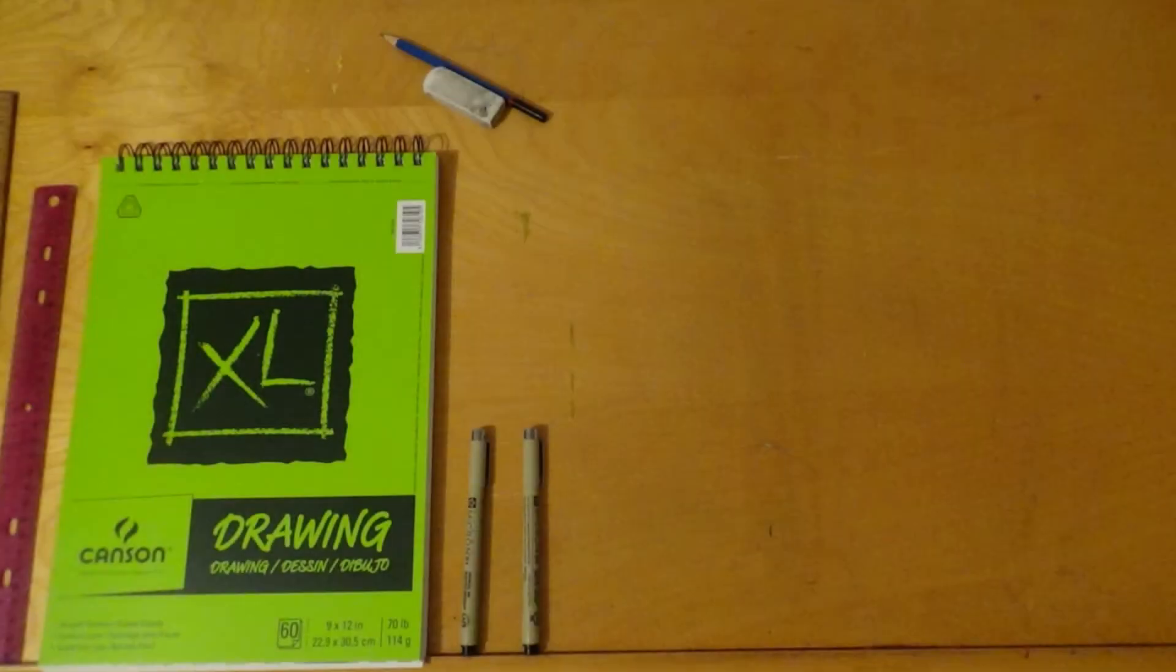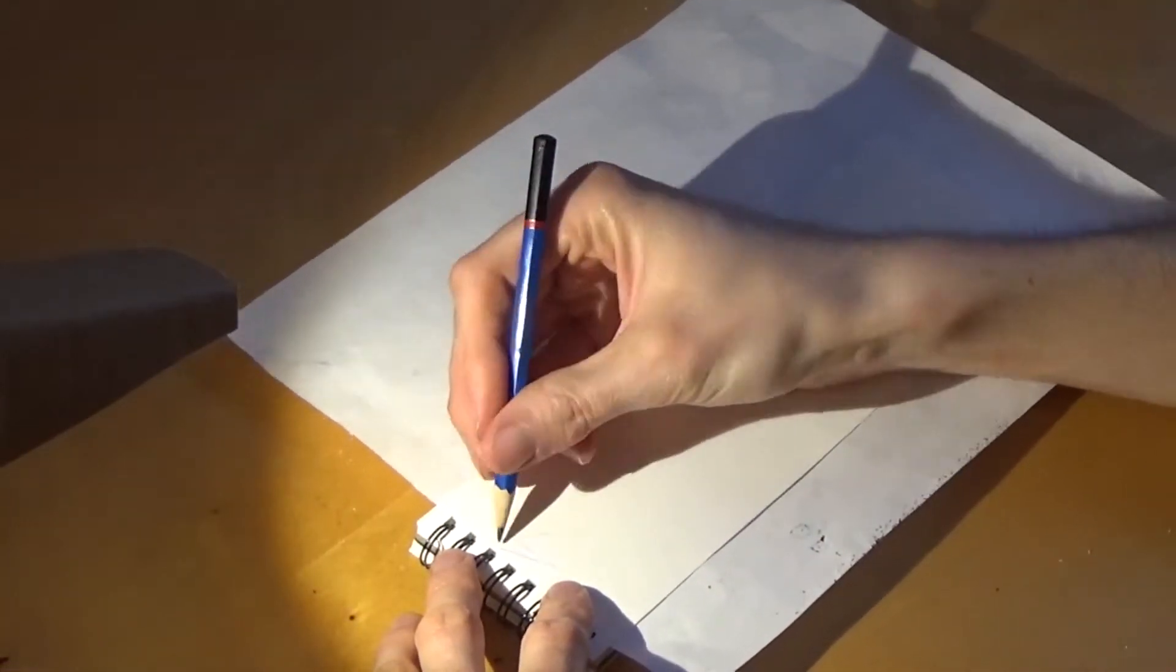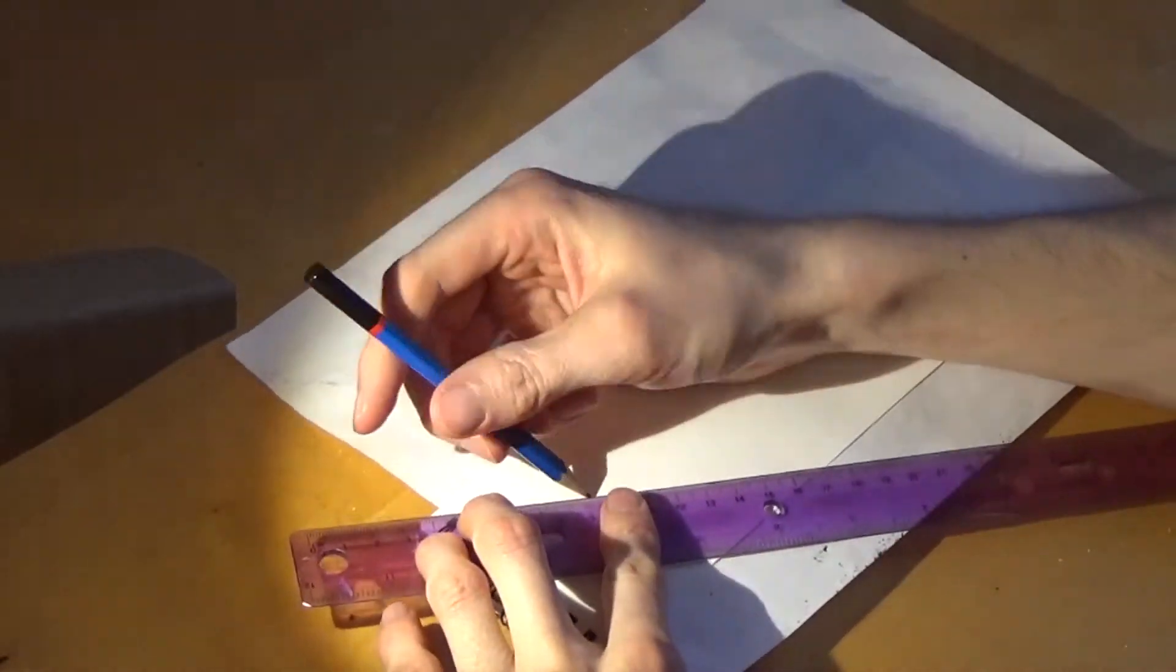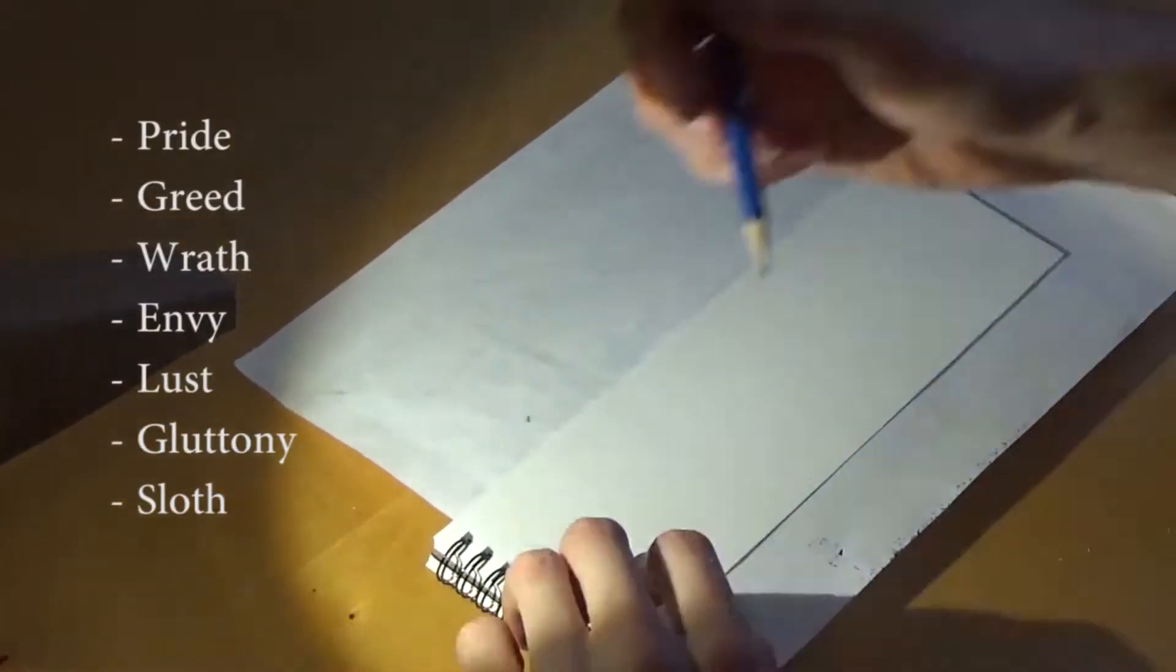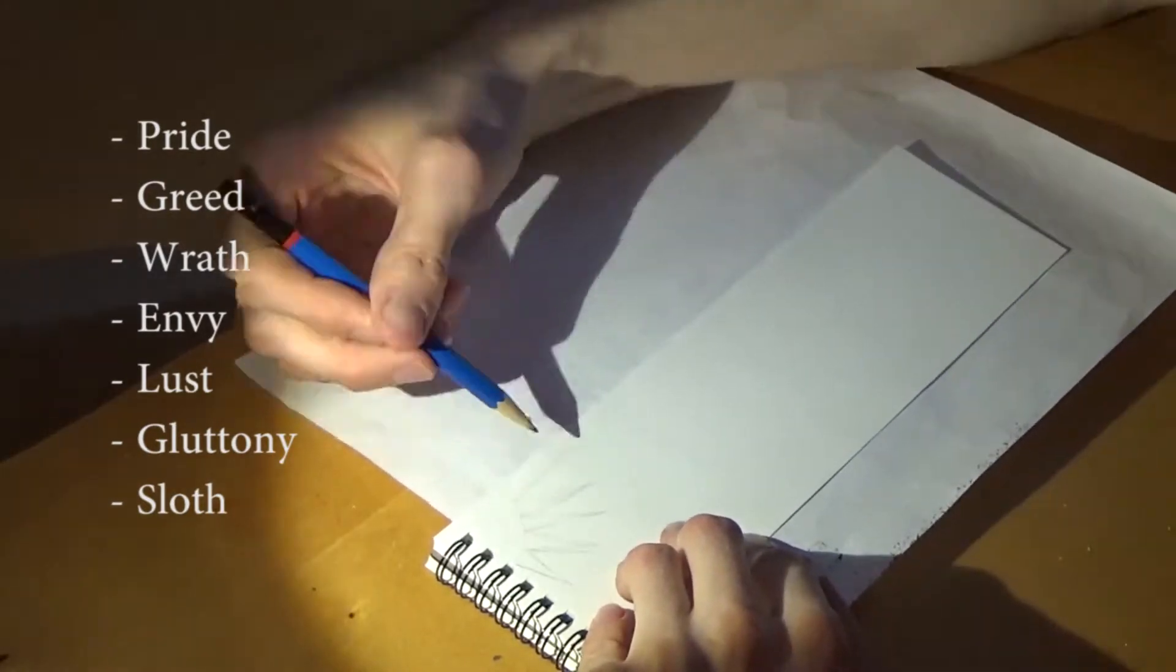Hello there, welcome to this fifth episode of Drawing with Don Pierre. Today the main subject is the seven deadly sins - not the anime because I haven't watched it, but the seven sins from religious books: pride, greed, wrath, envy, lust, gluttony, and sloth.